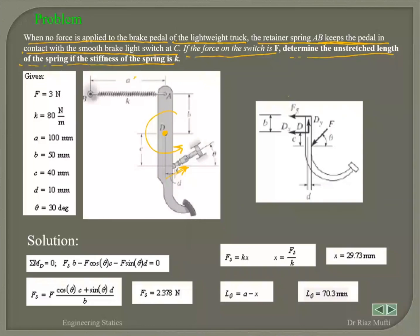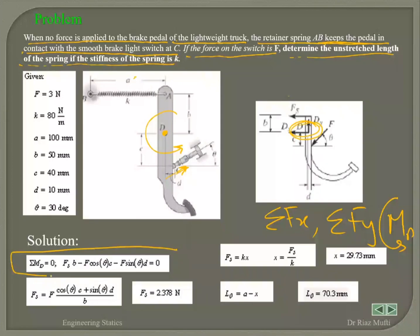Is it clear to everyone why we didn't start with sum of forces along X or Y? We started with the moment at D because when you take the moment at D, the unknown forces at D disappear — they don't appear in your equation. It's an easier approach. You can still do sum of forces along X and Y, but the process gets lengthy. If unknowns appear in your Fx and Fy equations, take the moment at that point so they disappear.